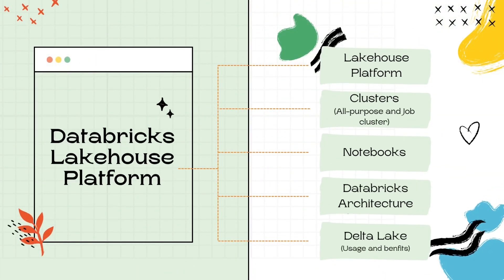The Databricks Lakehouse Platform section involves questions about the usage and benefits of the Lakehouse platform, clusters, notebooks, Databricks architecture, and delta tables management and optimizations. You will get a mix of direct and scenario-based questions. For example, you could be asked about the type of cluster to use based on a given scenario, or direct questions like choosing the correct magic command, or questions about the data plane and control plane. You can sign up for the Databricks Community Edition to get an overview of clusters and notebooks — links are in the description box below.